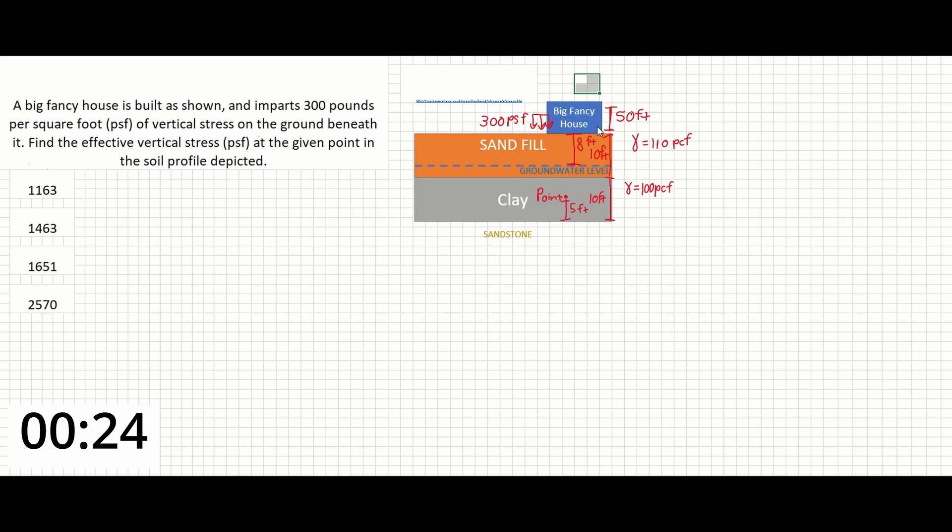In the given figure, we can see our big fancy house imparting 300 PSF to the soil beneath it. We can see point A located in the clay and all of the respective depths relative to each other. We also have the groundwater level called out and the respective densities of the sand and the clay.